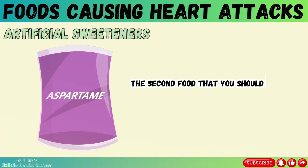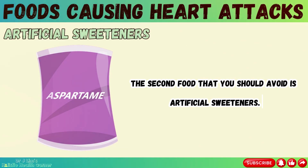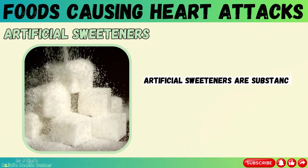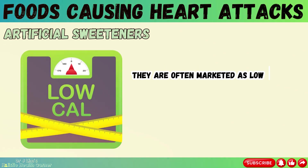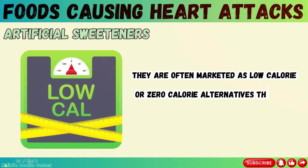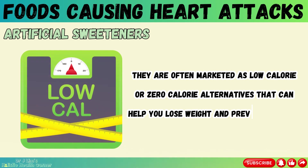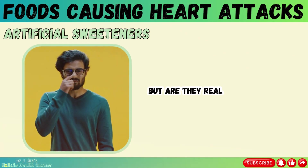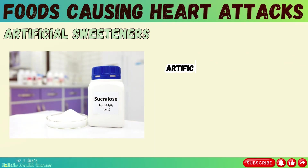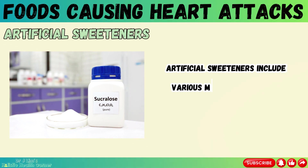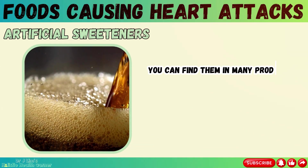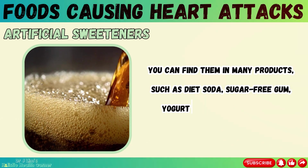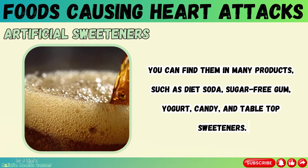The second food that you should avoid is artificial sweeteners. Artificial sweeteners are substances used to replace sugar in foods and drinks. They are often marketed as low-calorie or zero-calorie alternatives that can help you lose weight and prevent diabetes. Artificial sweeteners include various molecules such as aspartame, acesulfame potassium, and sucralose. You can find them in many products such as diet soda, sugar-free gum, yogurt, candy, and tabletop sweeteners.